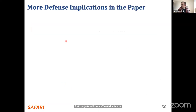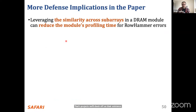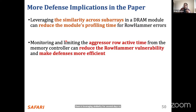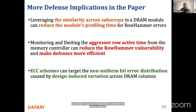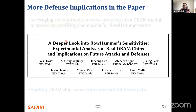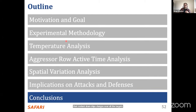We have many more defense improvements in the paper. One is leveraging the similarity of subarrays to reduce DRAM module profiling time. Another is limiting the aggressive row's active time from the memory controller to reduce vulnerability and make defenses more efficient. Another is using ECC schemes smartly to leverage design-induced variations. For at least three of those four manufacturers, we can say that cooling DRAM chips can reduce overall row hammer vulnerability.